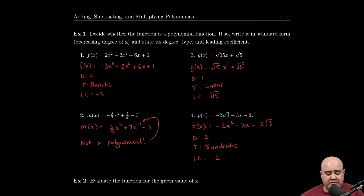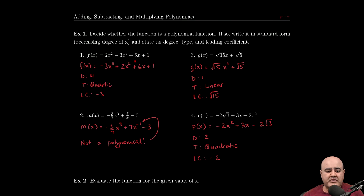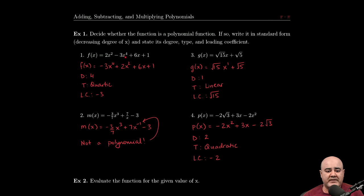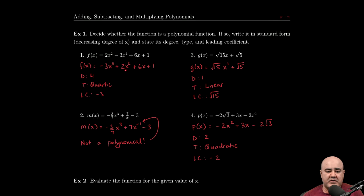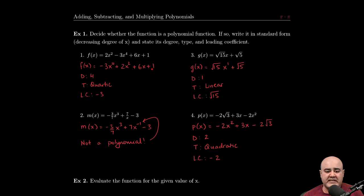So here we're given f(x) = 2x² - 3x⁴ + 6x + 1. To rearrange, we take the coefficients and the signs of the coefficients with the terms. So we rearrange this so that -3x⁴ is written first because it's the highest power. Then we can rewrite or rearrange the rest of the terms. So we have 2x², 6x, and 1.